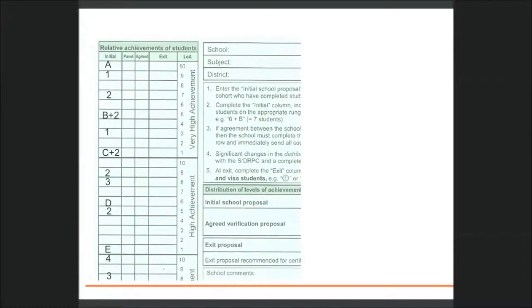Schools make achievement decisions by matching evidence to standards. They will use the evidence in folios to make fine-grained decisions relative to the syllabus standards in order to inform placement on the form R6.